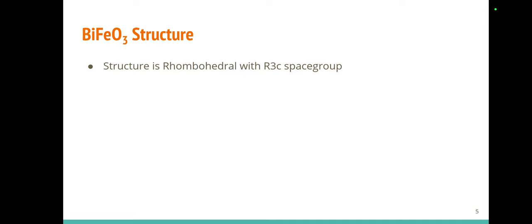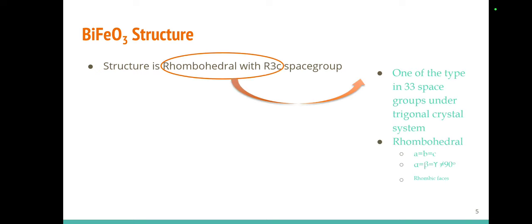The structure of bismuth ferrite studied in the paper has a rhombohedral structure with R3C space group. Rhombohedral means it is a structure in which all sides and angles are equal but the angles are not 90 degrees. R3C is one of the 33 space groups in the trigonal crystal system.